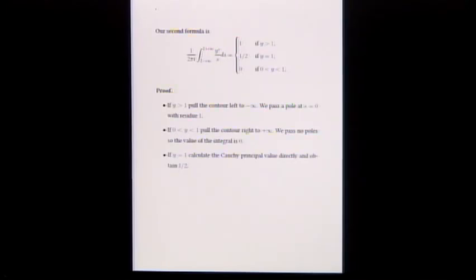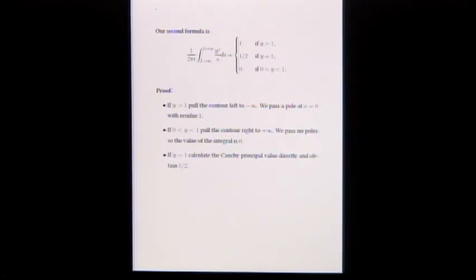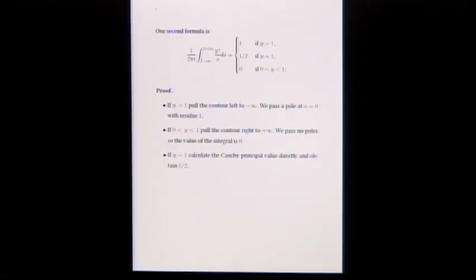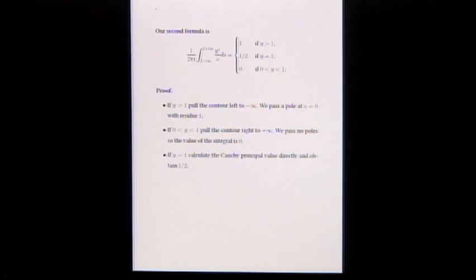The next step is a common problem in complex variables — any graduate course probably covers it. If you integrate from minus infinity to infinity on the 2-line the function (1 over 2 pi i) times y to the s over s ds, then if y is bigger than 1 you get 1, if it equals 1 you get 1/2, and if it's between 0 and 1 you get 0.